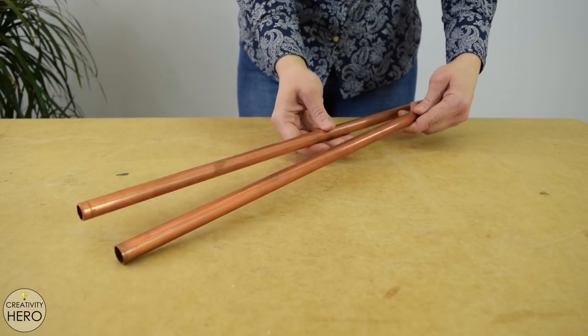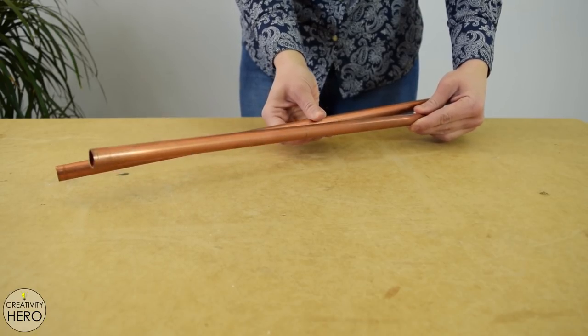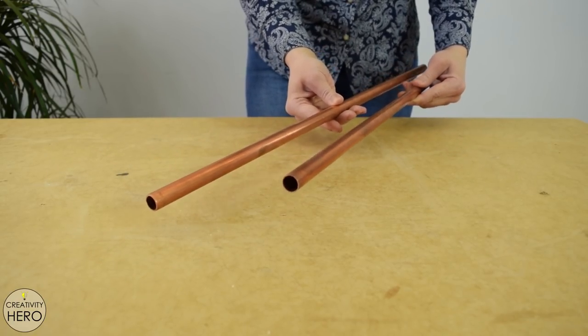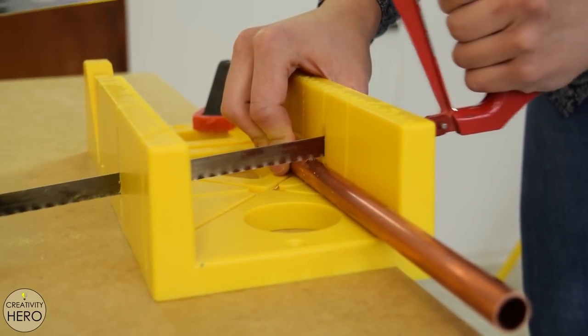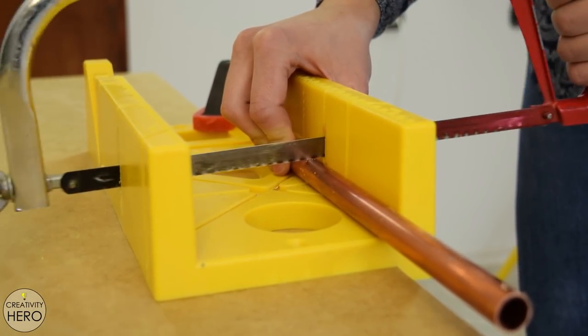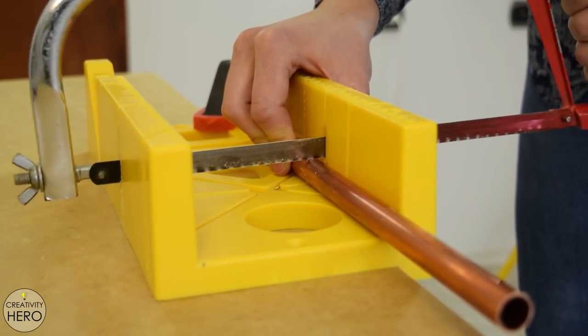Out of these copper pipes I'll cut two pieces 21 centimeters long and two pieces 11 centimeters long. I used a hacksaw for this purpose but you can use a pipe cutter if you have one.